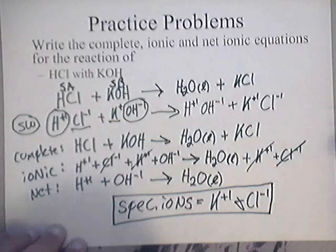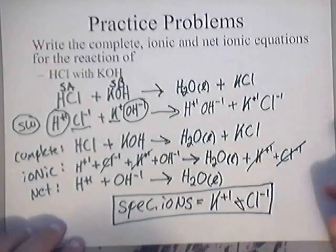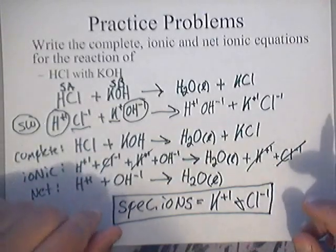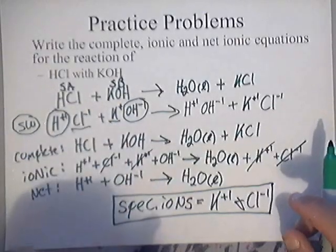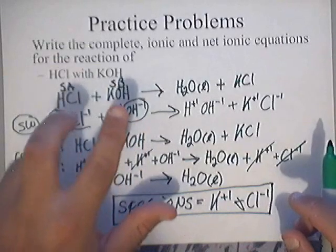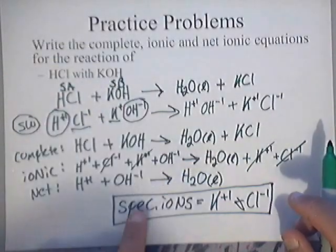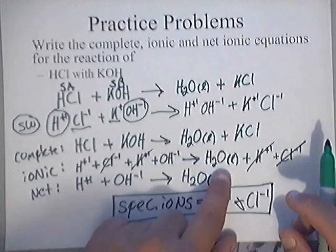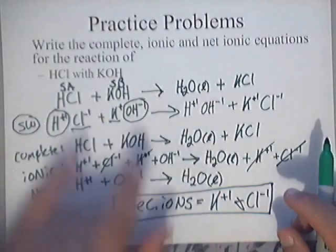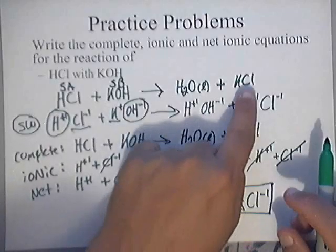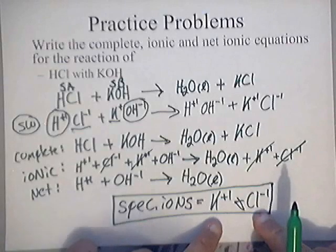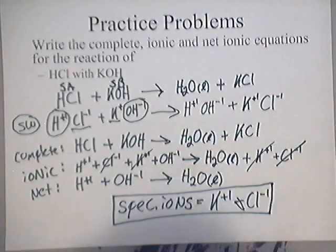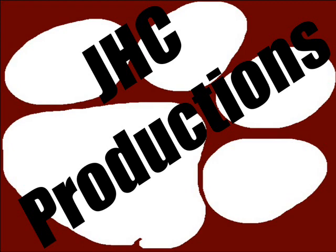Just watch this a few times and make sure you understand: any time you're writing a dissociation of strong acids and strong bases, you always break them down to ions. When you react them, you're always going to make water and some type of soluble salt, whose ions end up being spectator ions. I hope this helps!